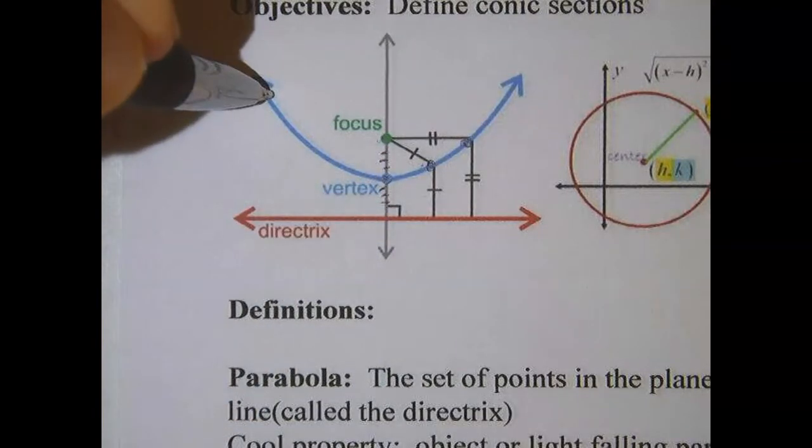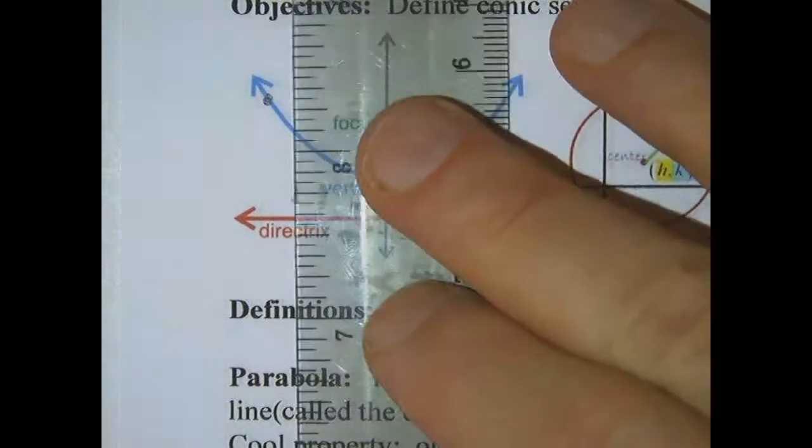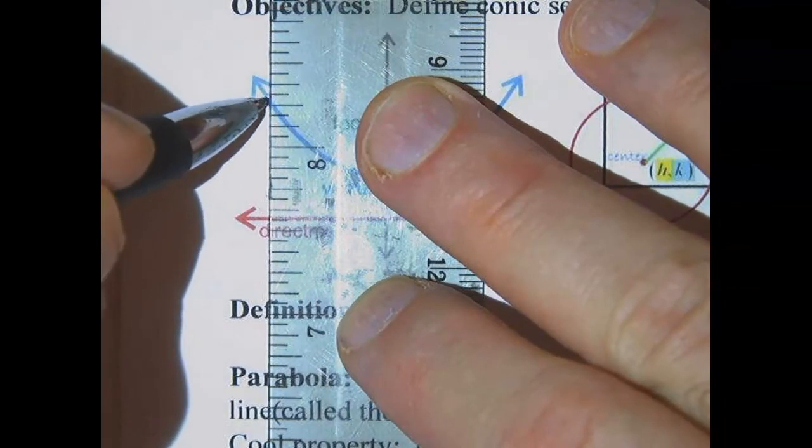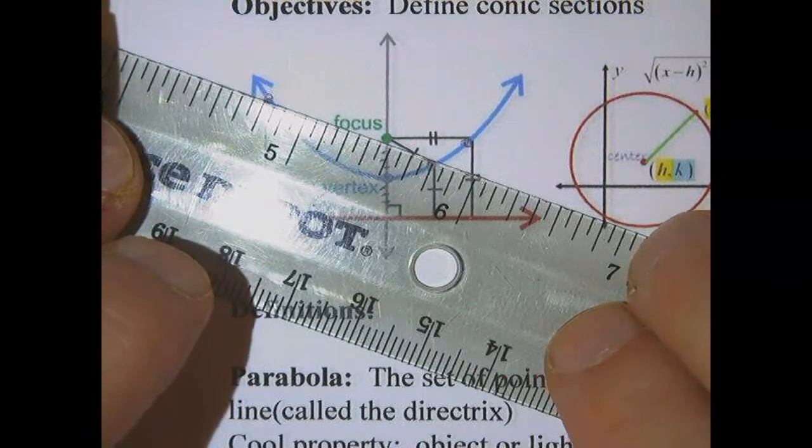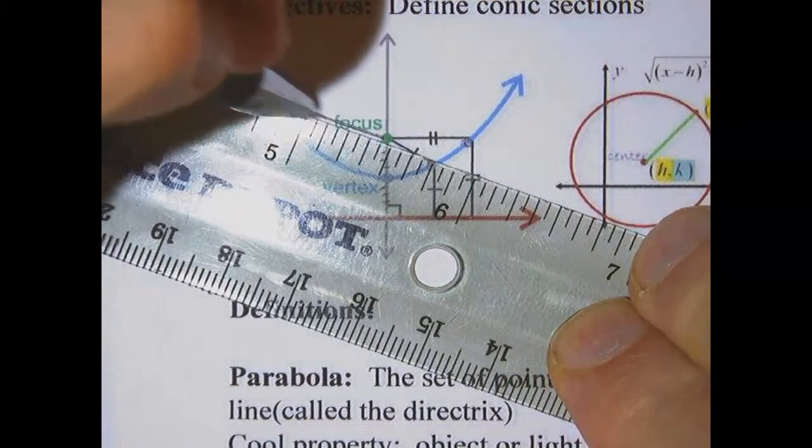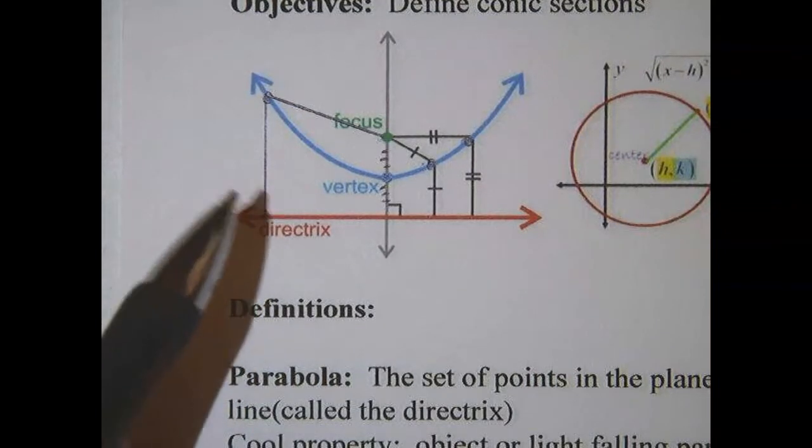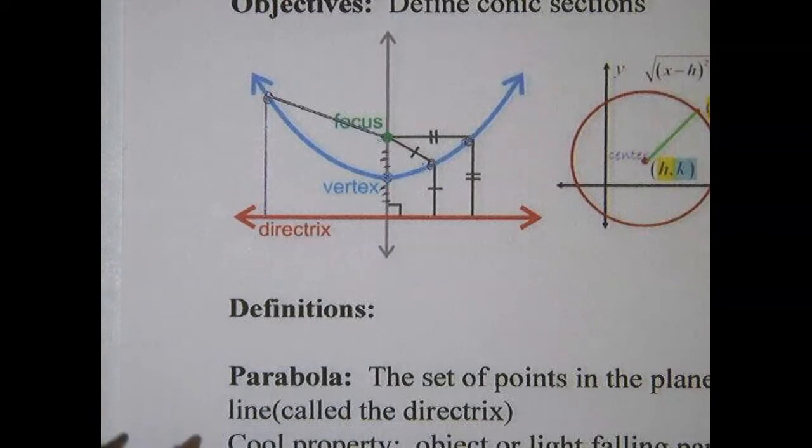Take a point way up here. And even if you take a point way up here and I would draw the distance to the directrix straight down here and then draw the distance to the focus straight here, those two lengths should be equal. And as long as this is truly a parabola, then that will be the case for every single point on the parabola.